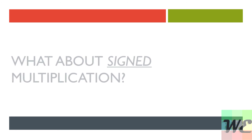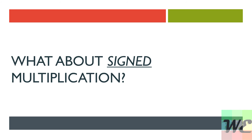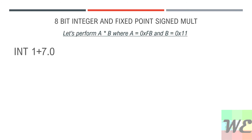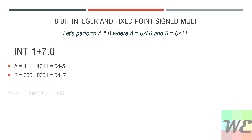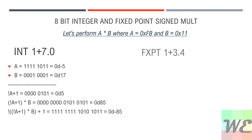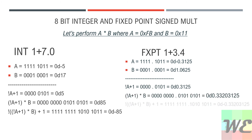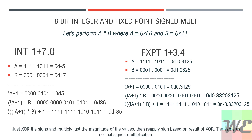Now we go over signed fixed-point multiplication. We multiply A equal to 0xFB and B equal to 0x11. In integer format, A is negative 5, so we do 2's complement to get positive 5, multiply by B, then reapply the sign to get negative 85. In fixed-point notation, A is negative, B is positive, we convert A to positive, perform the multiplication, then reapply the sign. To figure out the resulting sign, we just XOR the signs of the two inputs: positive times positive is positive, positive times negative is negative, negative times positive is negative, and negative times negative is positive.